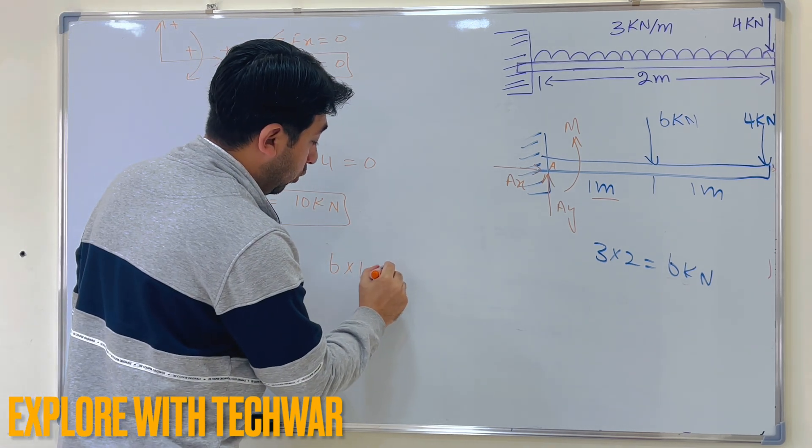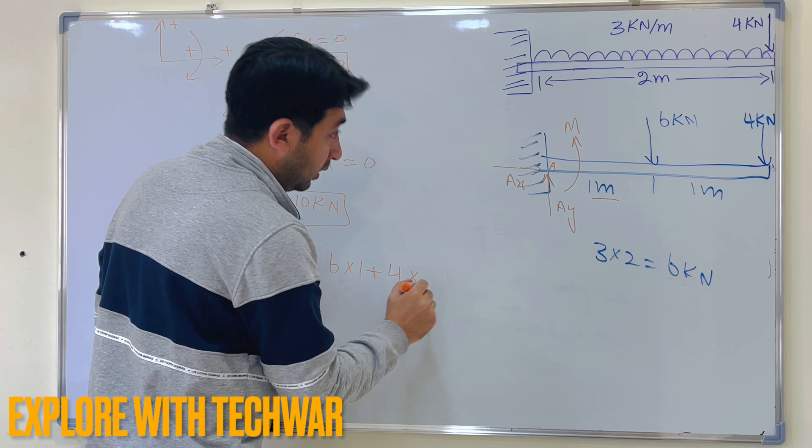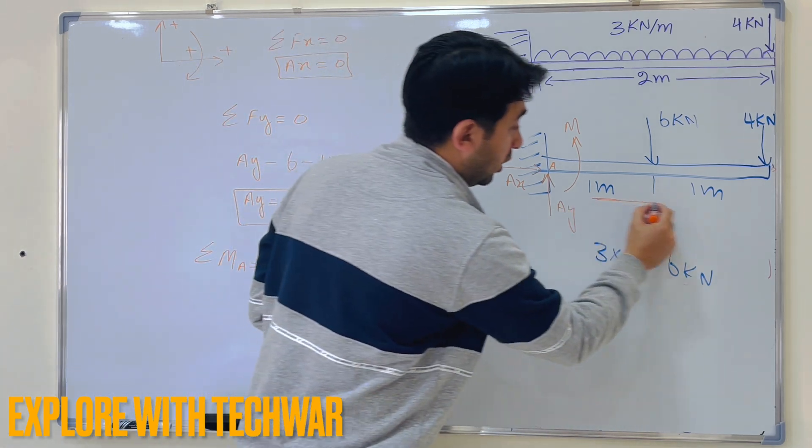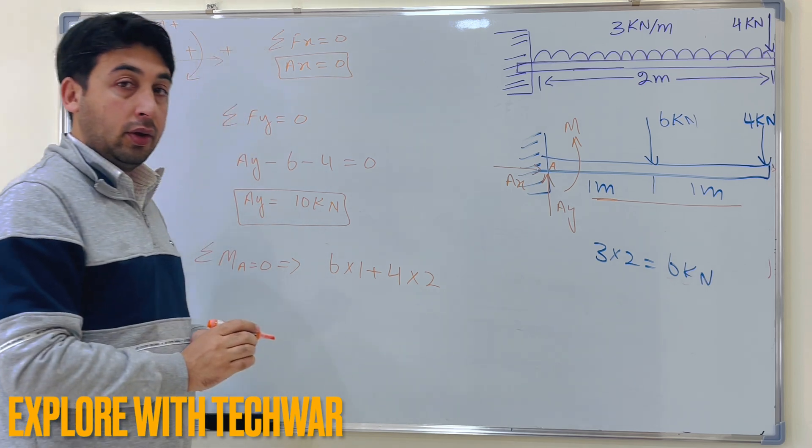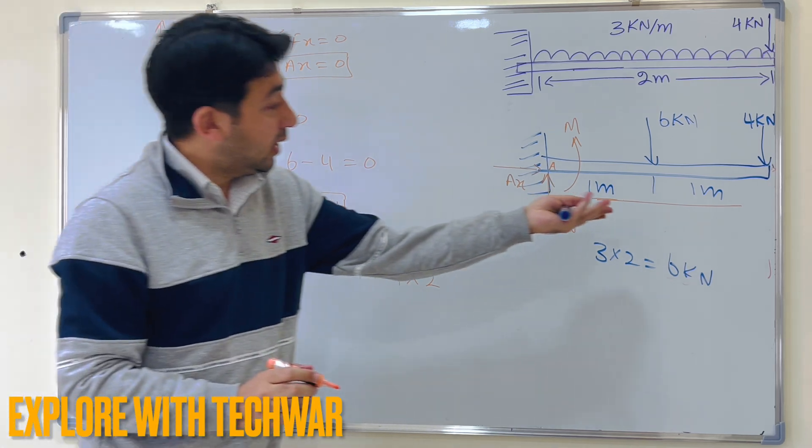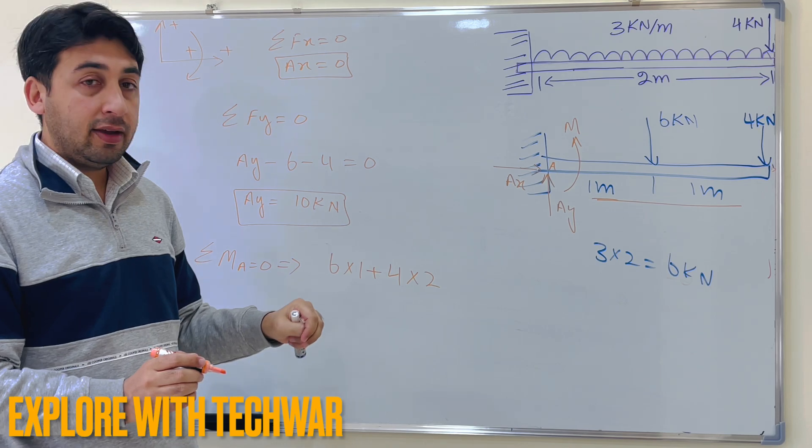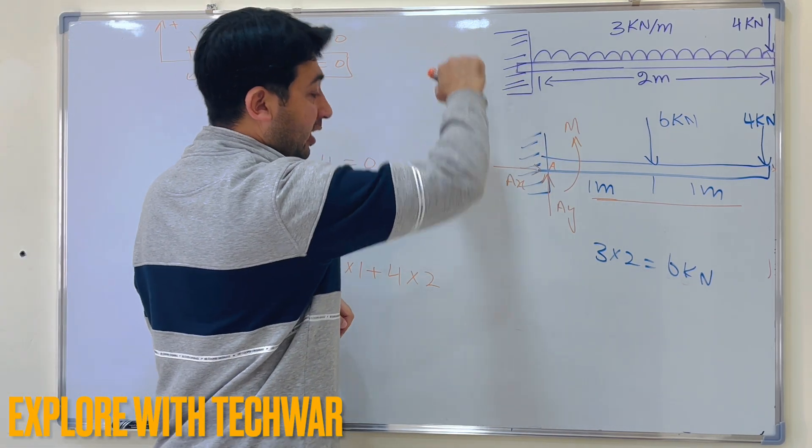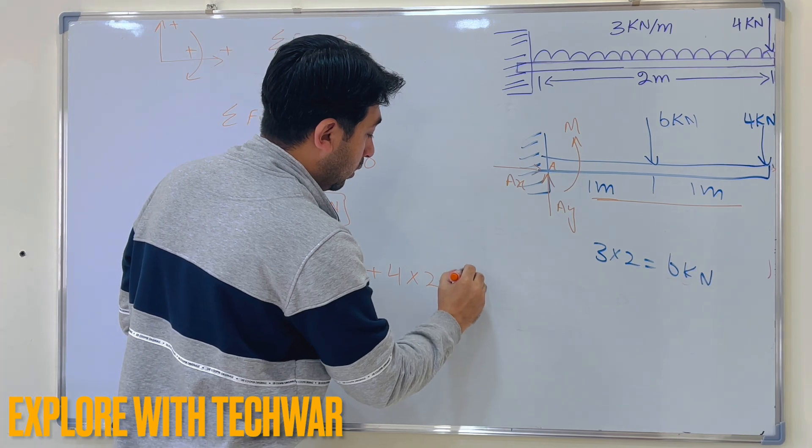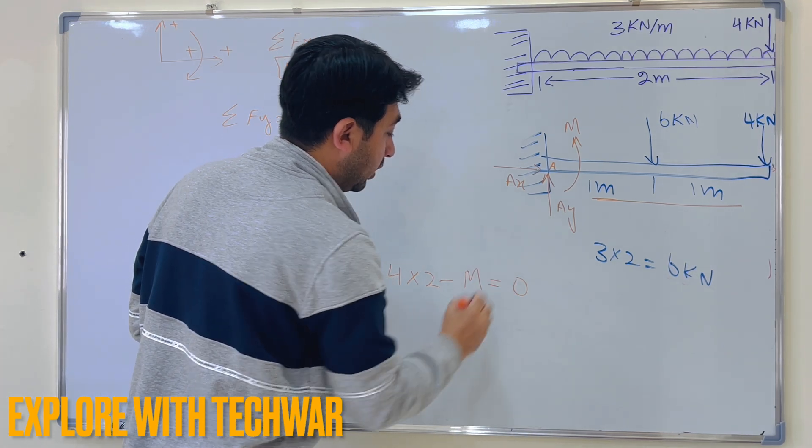Plus 4, similarly 4 times the distance, which is the total length of the beam, which is 2 meters, and then we don't have any other force that is producing moment about point A, but there is a moment at point A, and that moment is acting anticlockwise, so I will put negative M and that will be equal to 0.